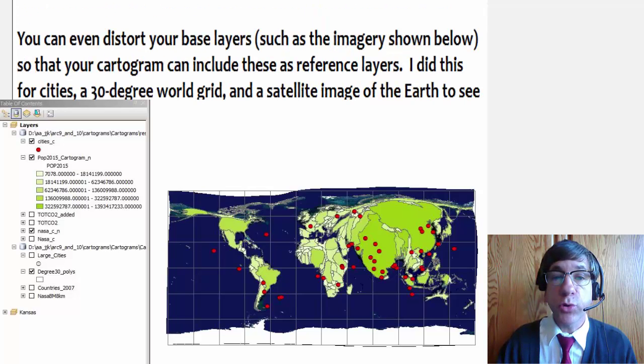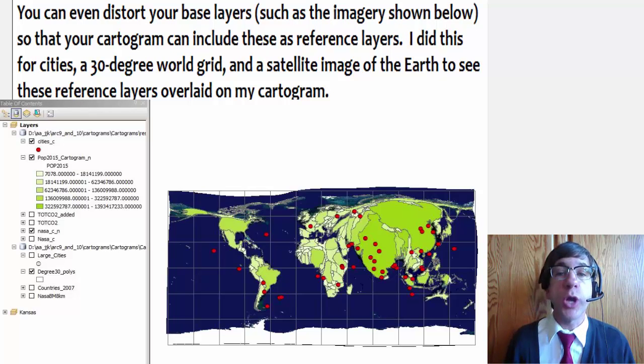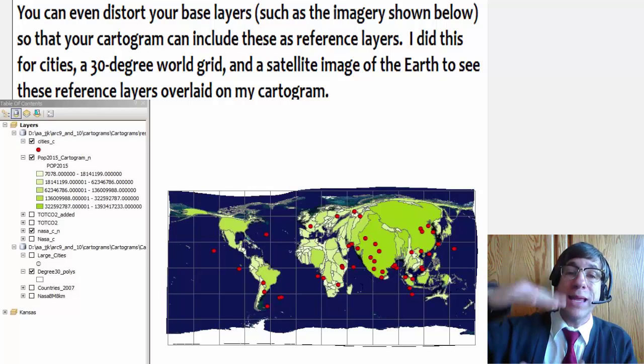You can even distort your base layers, such as the imagery shown here, so that your cartogram can include these as reference layers. I did this for cities, a 30-degree world grid, and a satellite image of the earth to see these reference layers overlaid on my cartogram.